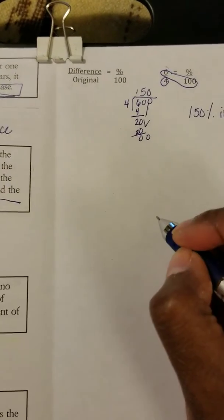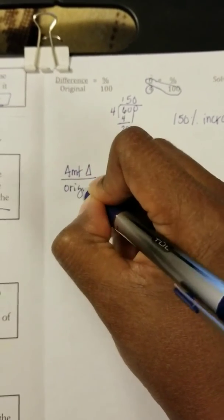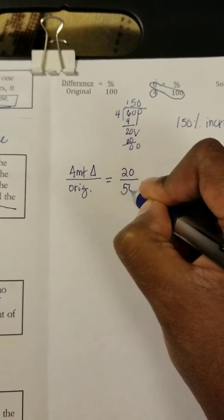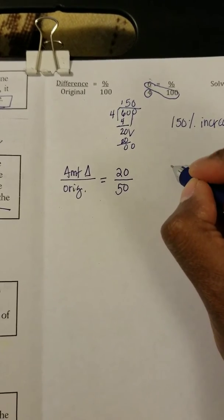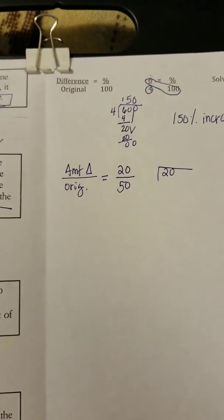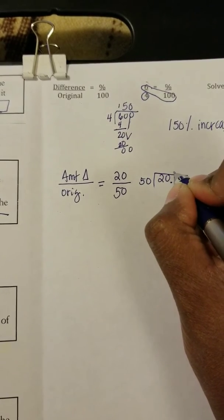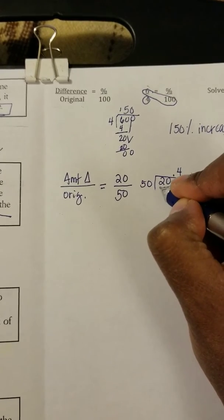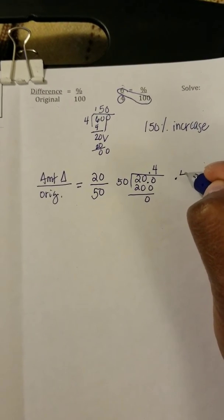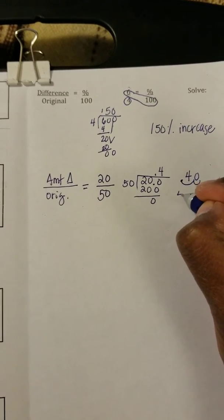We set it up using amount of change over the original. The amount of change was 20, and the original at week one was 50. Now we divide: 20 divided by 50. Since 50 cannot go into 20, we add a decimal and a zero — shoot that decimal straight up. 50 goes into 200 four times, giving us 0.4. We need this as a percent, so we move the decimal two places to the right: that gives us a 40% decrease.